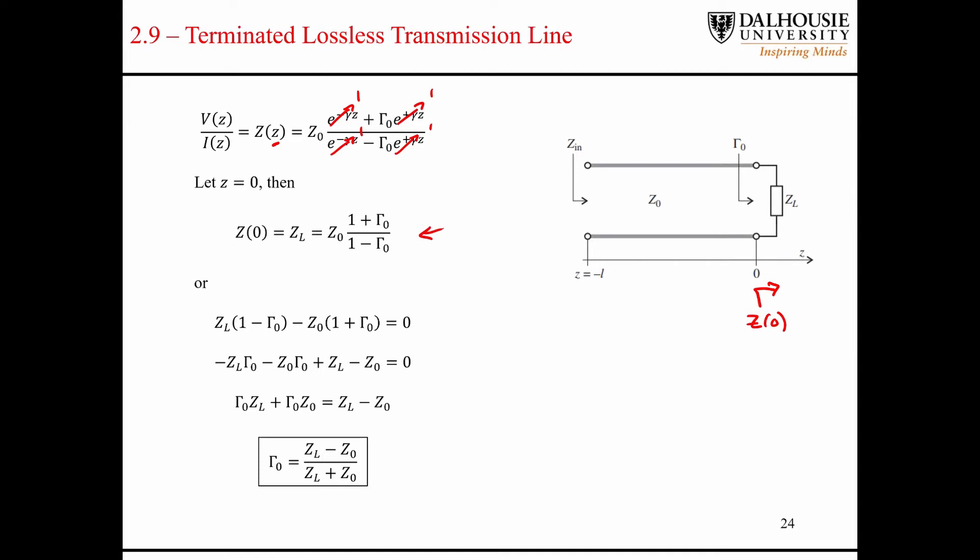We can manipulate this a little bit more. Multiply both sides by the denominator there. Distribute this guy through and distribute this guy through. Rearrange a little bit and we end up with this common equation for the reflection coefficient.